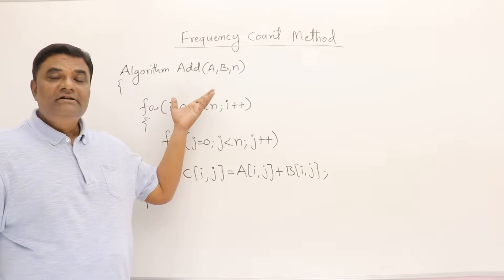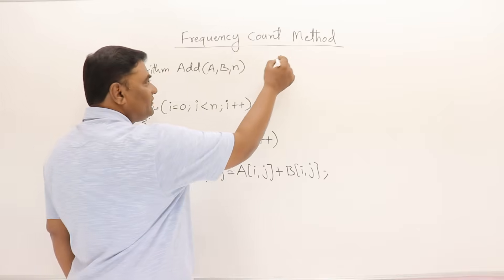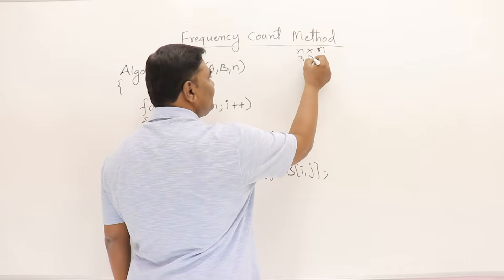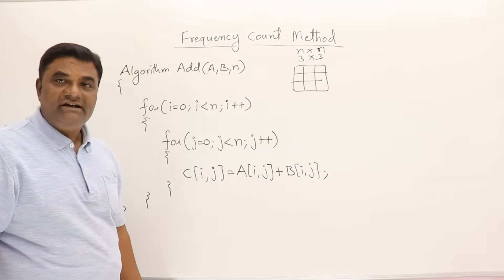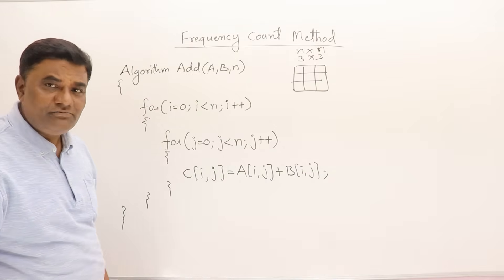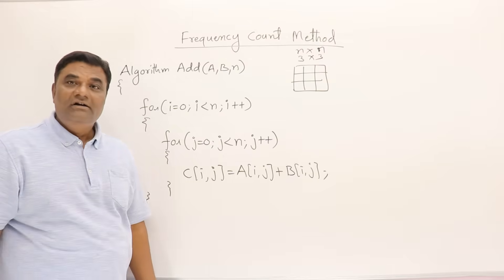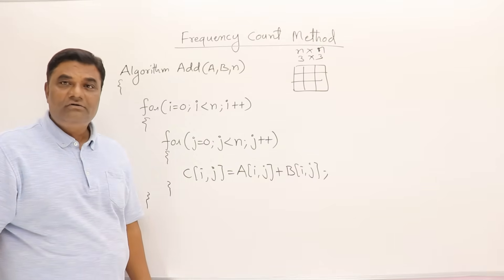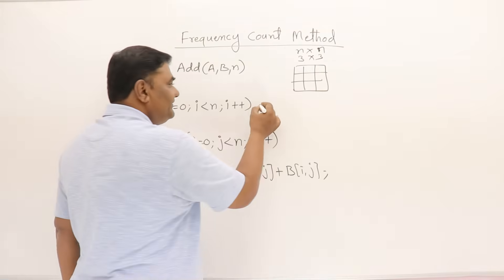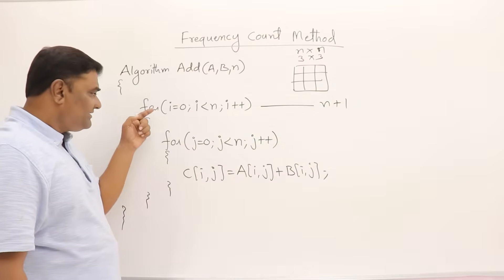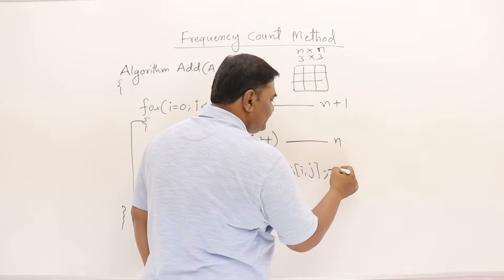The next algorithm is for finding the sum of two matrices. A and B are square matrices of dimension n × n. For example, if it is 3 × 3, these are two-dimensional arrays of size n by n. Here is an algorithm for finding the sum of two matrices. The outer loop will take n plus one time, and whatever is inside will execute for n times.